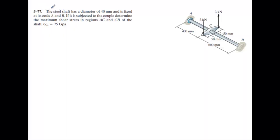This is problem 5-77. In this problem you have a steel shaft with a diameter of 40 millimeters. It's going to be fixed at ends A and B and subjected to a couple. You want to find the maximum shear stress between A and C, and between C and B. It has a shear modulus of 75 gigapascals.